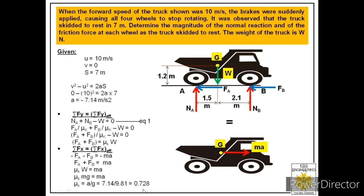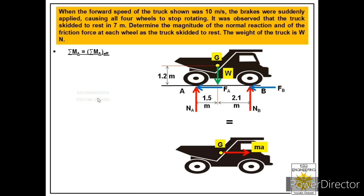Now we apply the third equation: summation M = summation M effective. We find the moments due to all forces about point A. Forces NA, FA, and FB all pass through point A, so their moments are zero. We are left with only two forces — W and NB — to calculate moments.